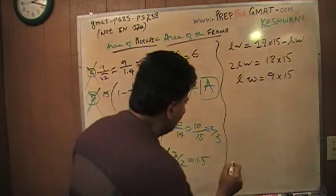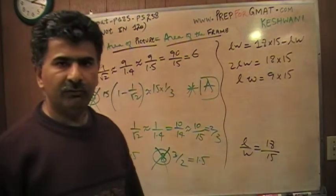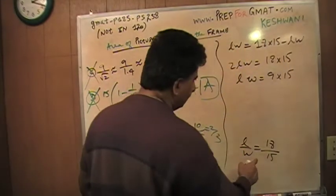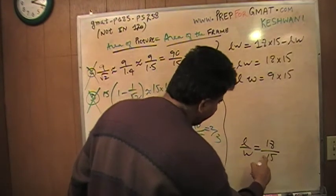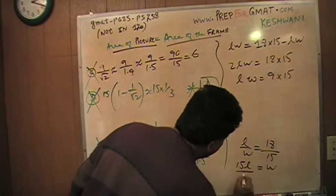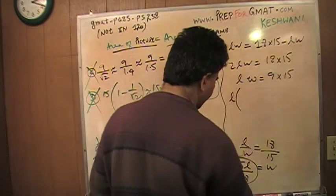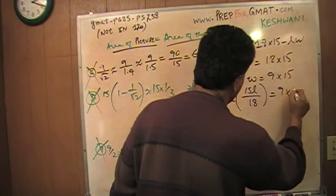We also know that the ratio of length to width has to be the same as the ratio of the frame. I'm going to solve for W. 18 times W is 15 times L. Bring W on top and 18 on bottom. So W equals 15L over 18. I'm going to put it in here: L times W, which is 15L over 18, equals 9 times 15.